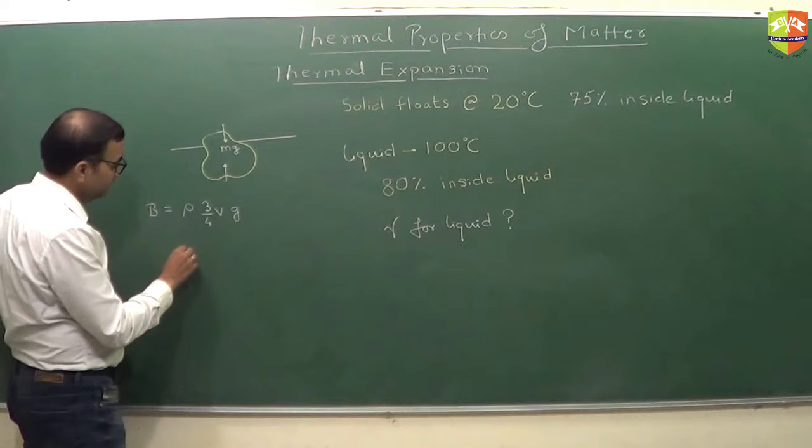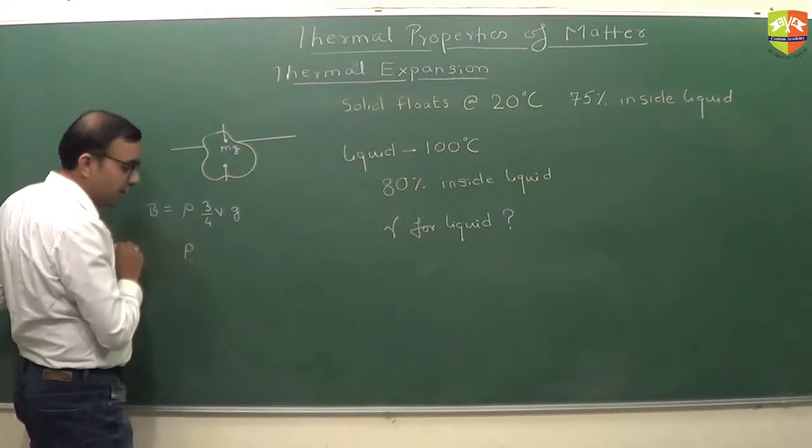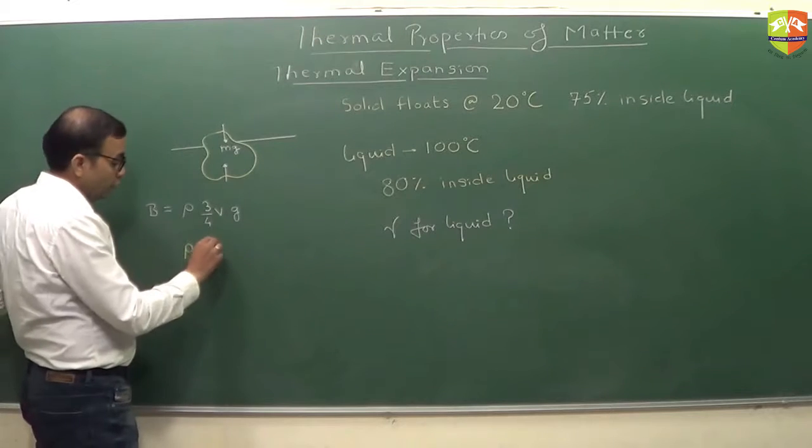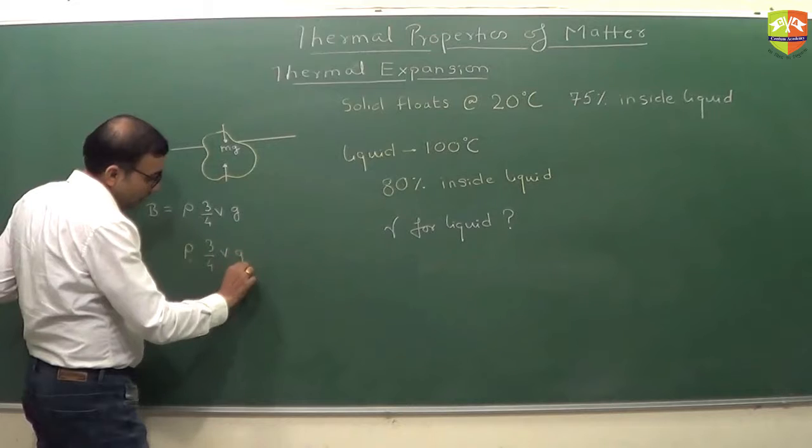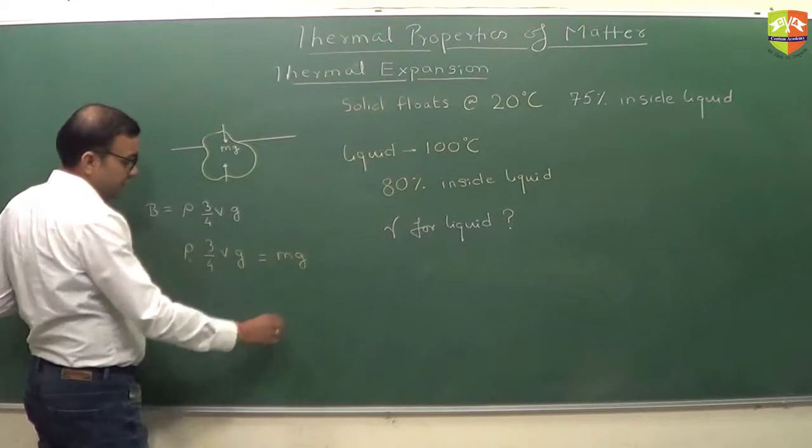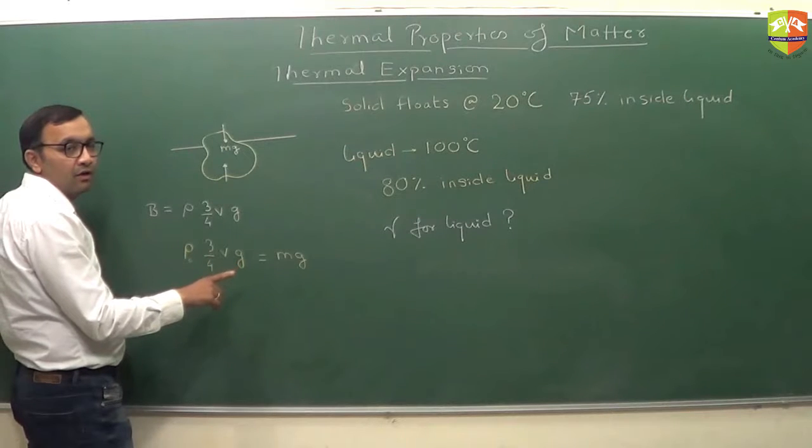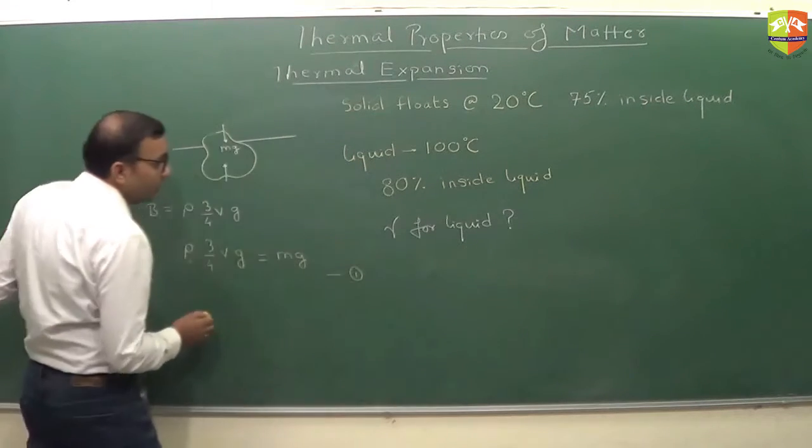Initially, rho0 times 3 by 4 V into g, this is equal to mg. This is your first equation.